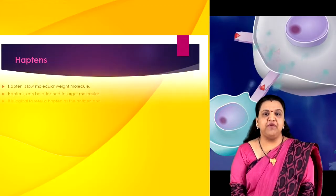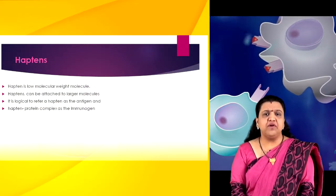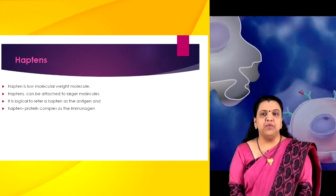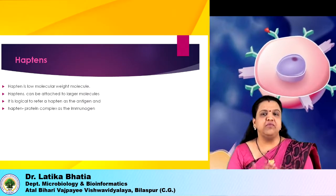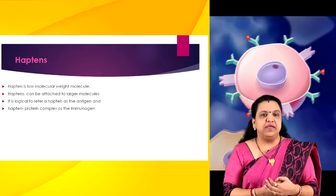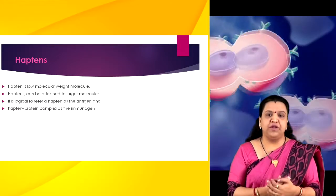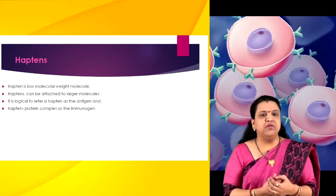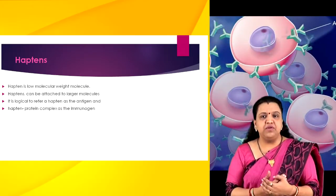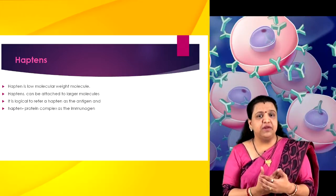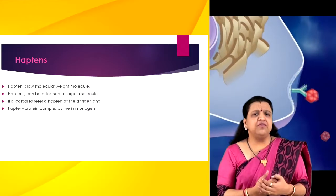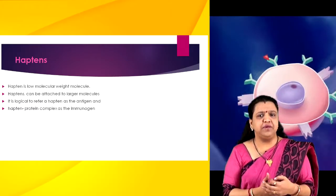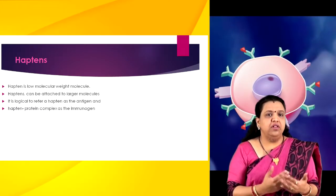Now let's talk about haptens. A hapten is a low molecular weight molecule that is recognized by preformed antibody but is not itself immunogenic unless conjugated to a carrier molecule which provides an epitope recognized by the helper T-cell. Haptens can be attached to a larger molecule and in that physical form can, with the help of T-cells, induce the formation of antibodies. One can distinguish between molecules which can stimulate an immune response, i.e. immunogens, and those which can react with antibodies but cannot initiate an immune response, i.e. haptens or individual antigenic determinants.